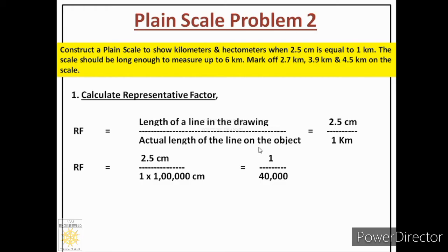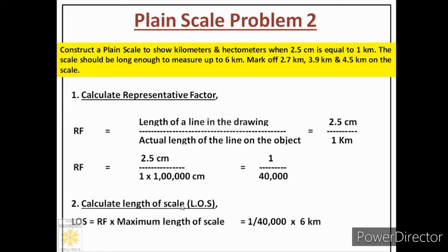In order to accommodate 6 kilometers on paper, we reduce it by 40,000 times, and that gives us the length of scale. Length of scale equals RF multiplied by maximum length of scale: 1 by 40,000 multiplied by 6 kilometers. Converting kilometers into centimeters by multiplying by 10 to the power 5, we get an answer of 15 centimeters. A line of 15 centimeters on paper will represent 6 kilometers.